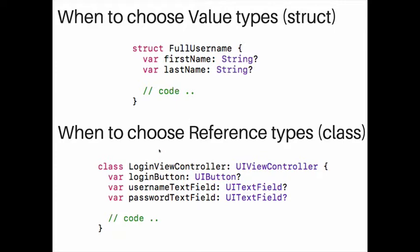Those are the rules to use when choosing between struct and class. Remember that internally, classes are treated as reference types and structures as value types. Value types are copied between assignments, but reference types are copied by reference. That's what I wanted to cover in this video. I'll be creating more videos about Swift topics — thanks for watching, until next time.